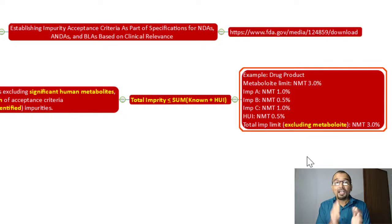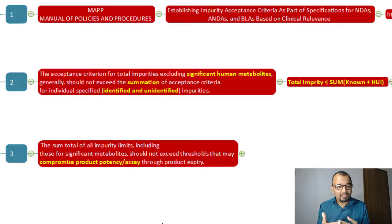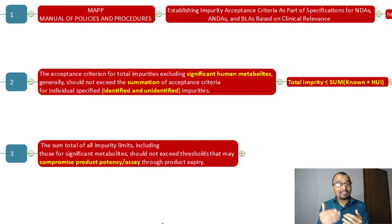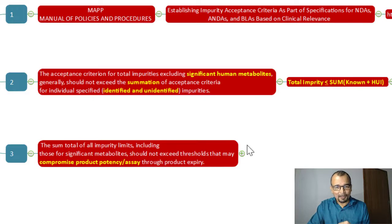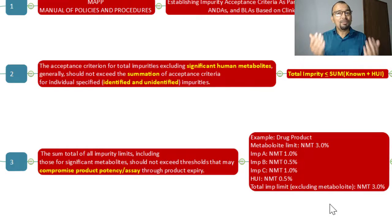Now let us understand the second important guidance provided by this MAPP: the sum total of all impurity limits, including those for significant metabolites, should not exceed a threshold that may compromise product potency or product assay through product expiry. This statement is very important and meaningful for confirming whatever total impurity limits we have just set. Using the same example — metabolite 3%, impurities A, B, C, highest unknown — we concluded that not more than 3% excluding metabolite can be the limit for total impurities.